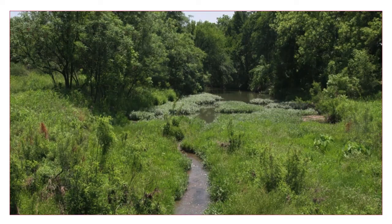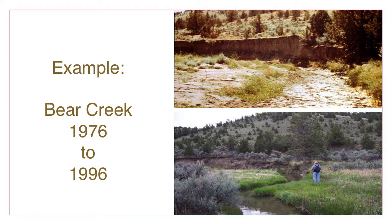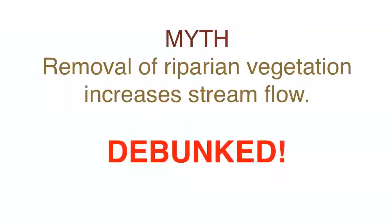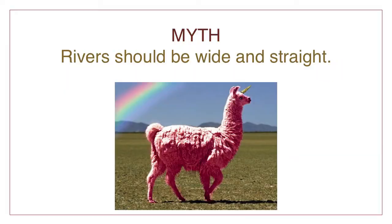Riparian stream banks are full of organic matter that soaks up water like a sponge. That water is released slowly over time, helping keep the creek flowing between rains. Eventually, Bear Creek recovered, as you can see in the bottom photo. It has regained its riparian sponge, but only after the grazing management program was changed to allow regrowth of vegetation. Time has been a good teacher in riparian management, and this mythical belief has been debunked.